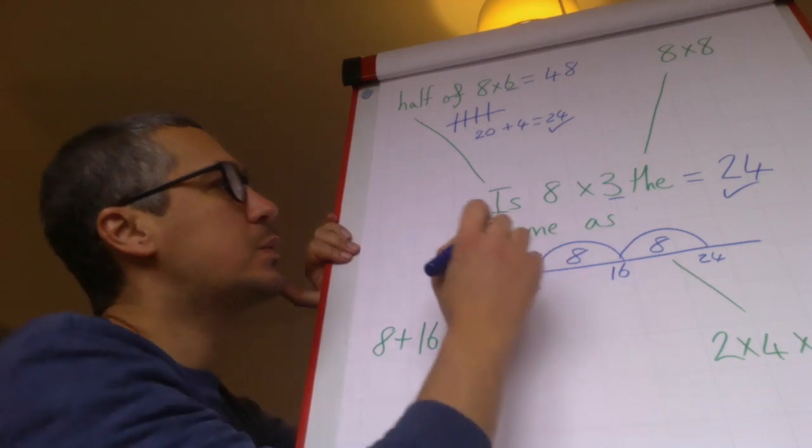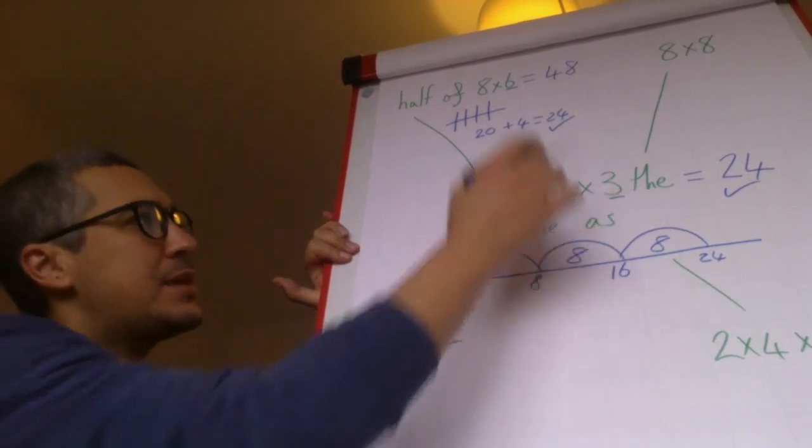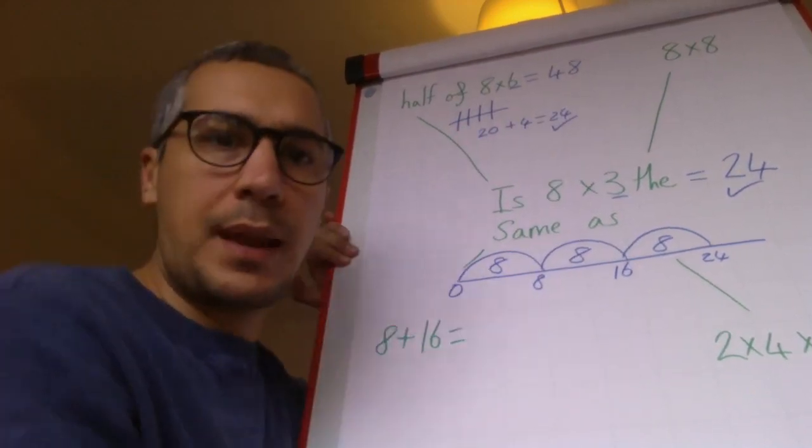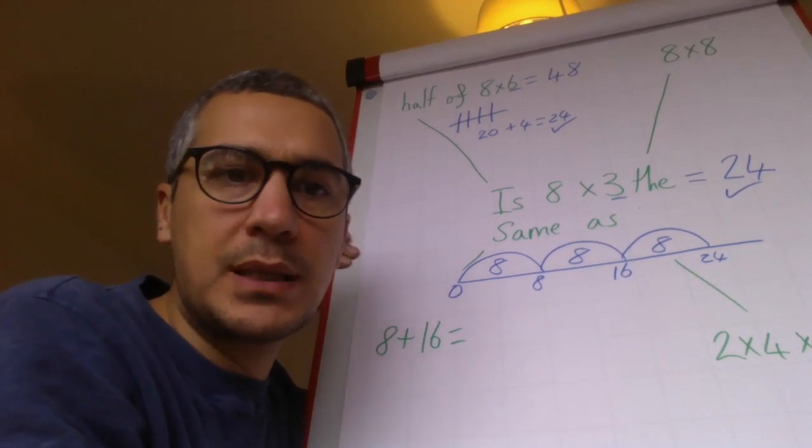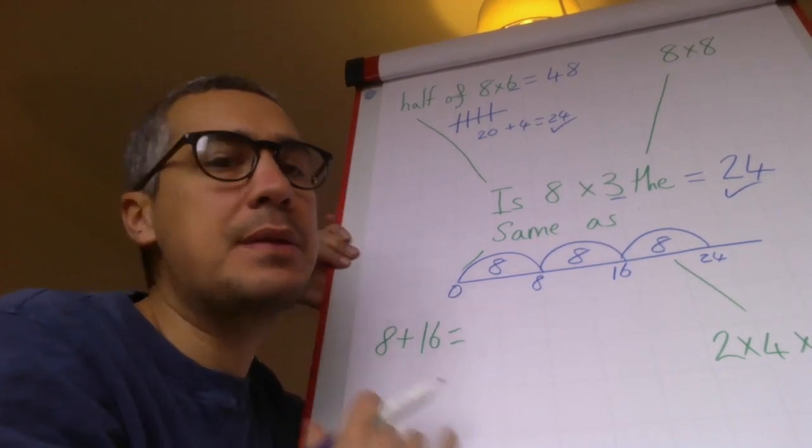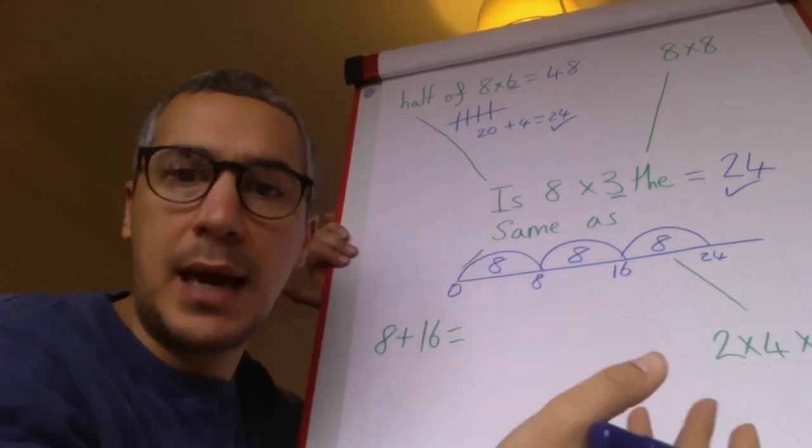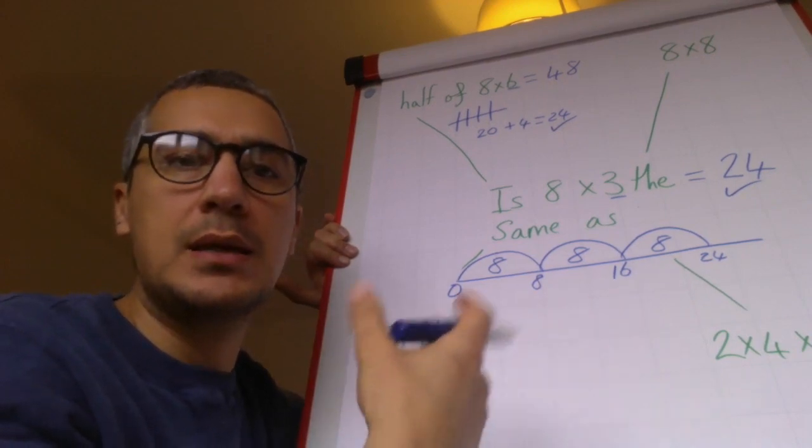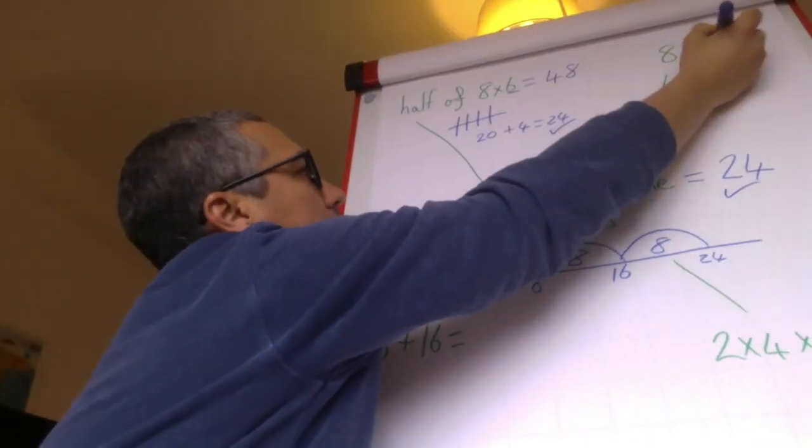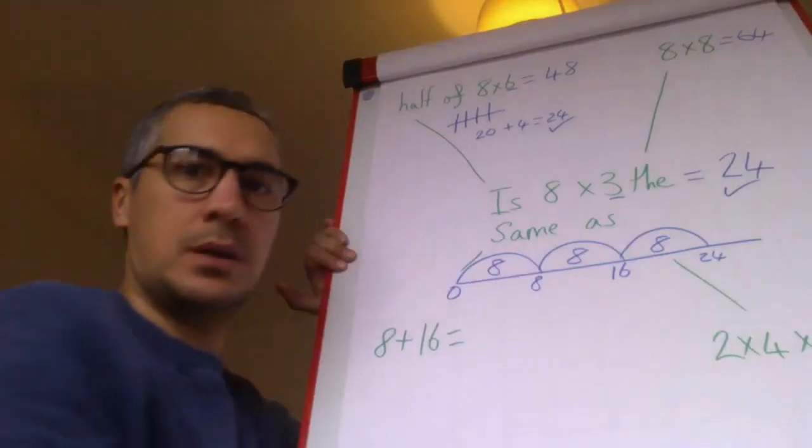Now the next one is 8 times 3 the same as 8 times 8. Now that's a nonsense question. That can't be the same because 8 times 8 is going to be much much bigger than 8 times 3 or 8 lots of 3. Now I know that 8 times 8 equals 64, so I know it is not the same. So that's false.